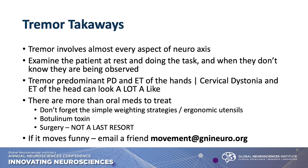Tremor takeaways: tremor involves almost every aspect of the neural axis. It's key to examine the patient doing the task that brings out the tremor. Things can look really similar — tremor-predominant PD and essential tremor of the hands can look a lot alike; cervical dystonia and essential tremor of the head can look alike. Objective tools like the DAT scan can be helpful in distinguishing PD from ET. There are more than oral meds — weighted utensils, ergonomic strategies, botulinum toxin, and of course surgery, but that's not a last resort. And lastly, if it moves funny, email a friend — I see videos constantly and I'm happy to give my two cents.